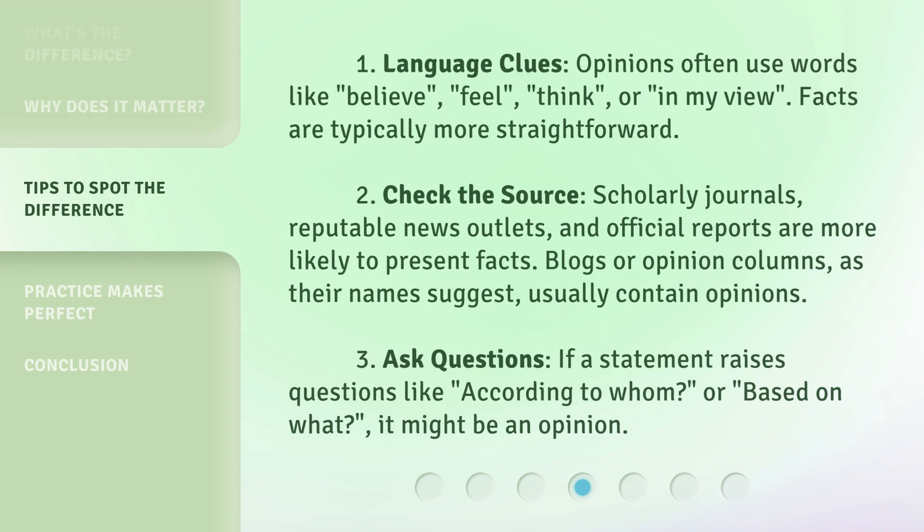One: language clues. Opinions often use words like believe, feel, think, or in my view. Facts are typically more straightforward. Two: check the source. Scholarly journals, reputable news outlets, and official reports are more likely to present facts. Blogs or opinion columns, as their names suggest, usually contain opinions.